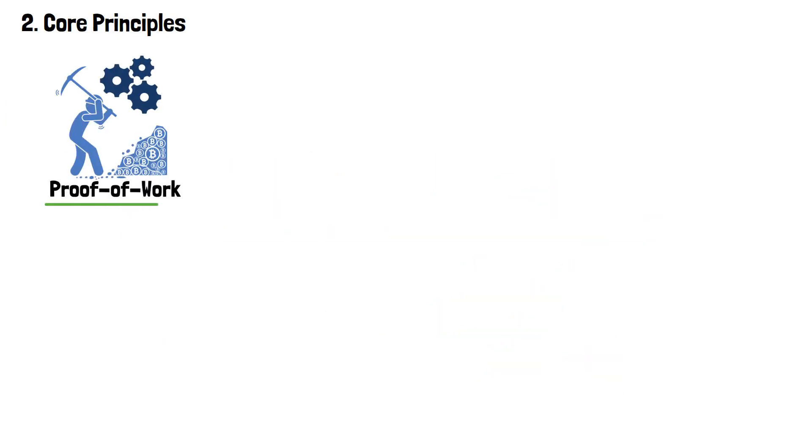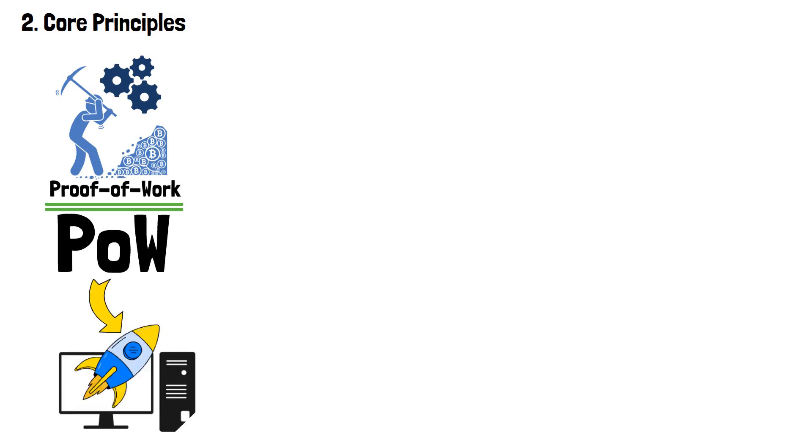Now, it's time to address their core principles. By doing so, we're going to see their main differences as well. Let's begin with proof-of-work, or, as it's commonly known, POW. POW is almost synonymous with computational power, since it entirely relies on it.